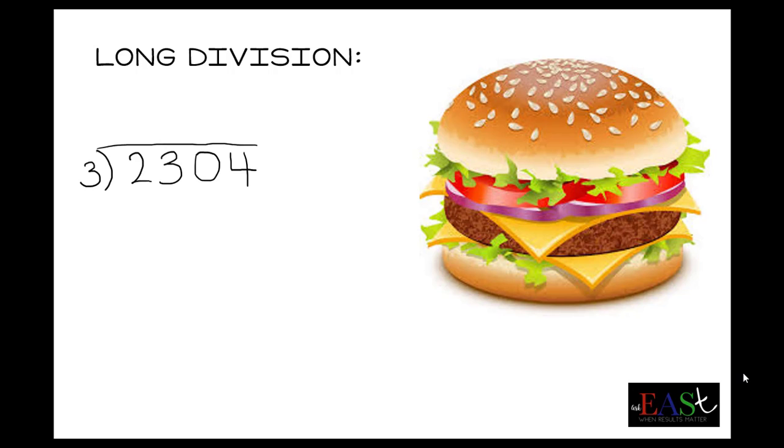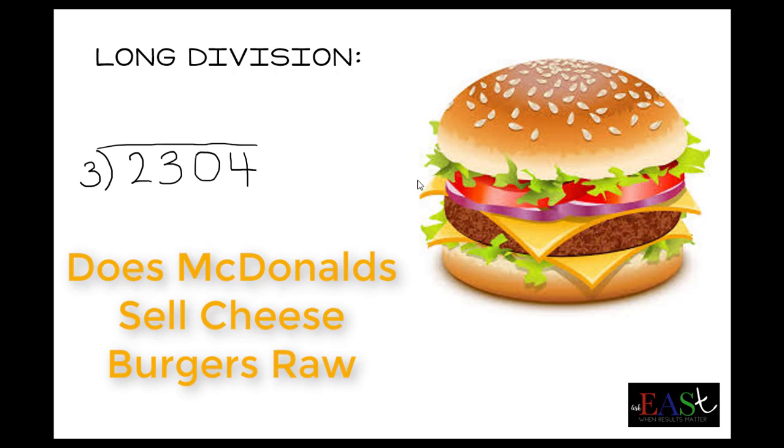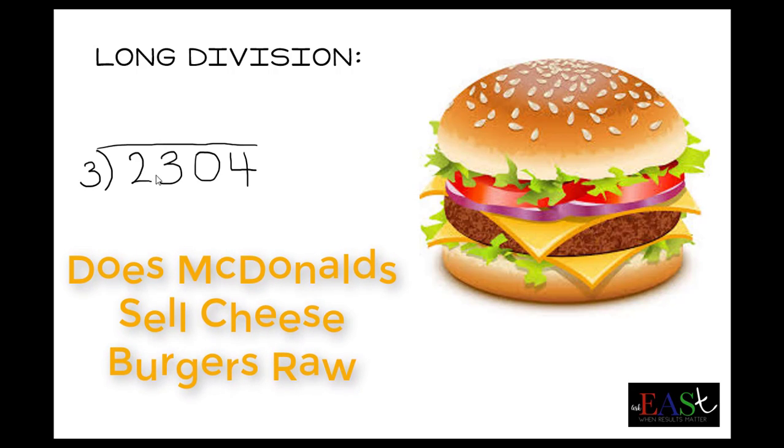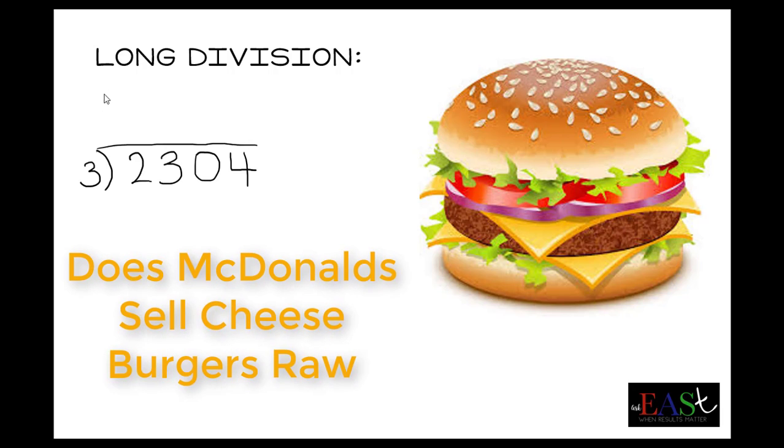With long division, it's easy. You just need to think about the sentence: Does McDonald's sell cheeseburgers raw? The way you do with BODMAS, you have this mnemonic device to remember the process.